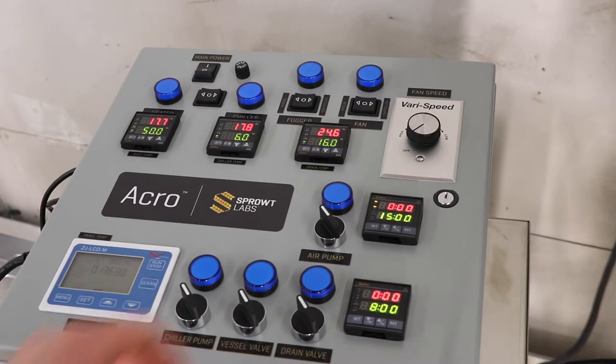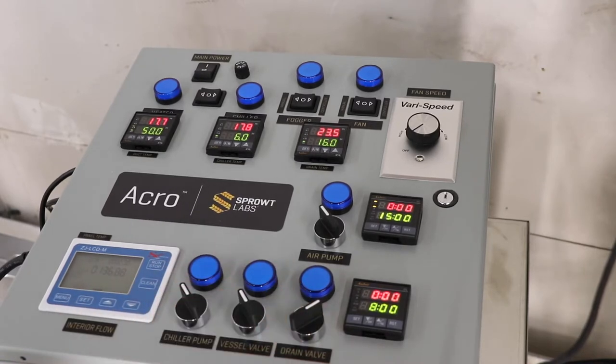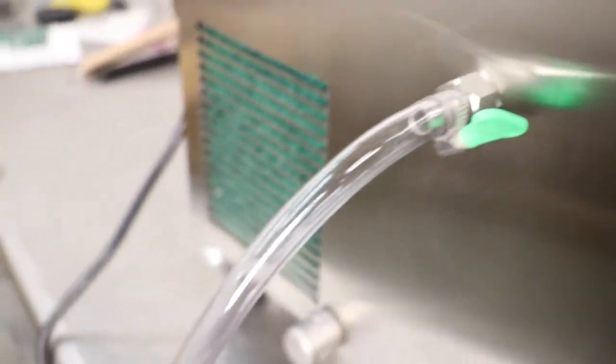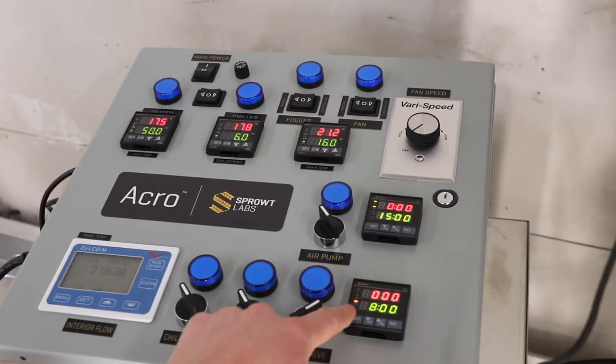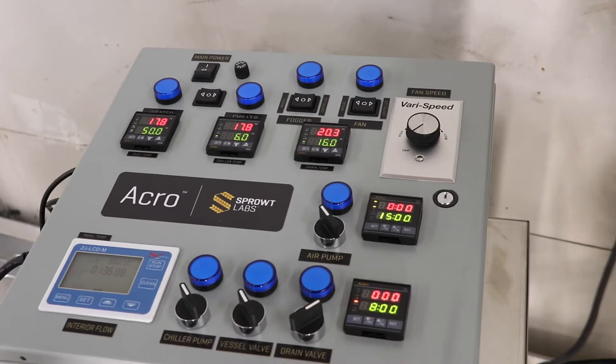I'll turn the knob for the drain valve indicating I'd like the drain valve to turn on or open after a set amount of time. If I want the steep to end eight hours after I start it I'll set the drain valve timer to eight, press reset, and the clock will start.